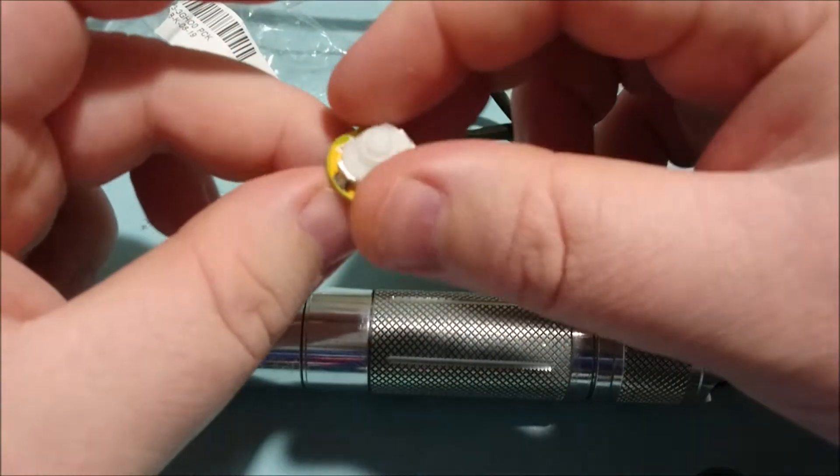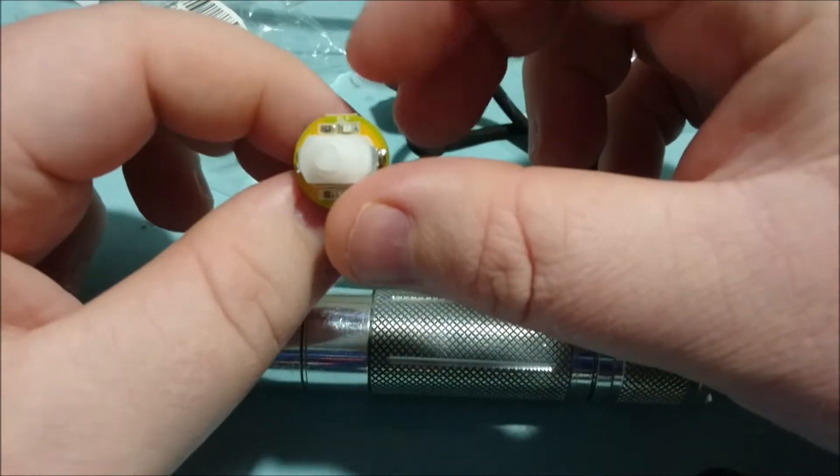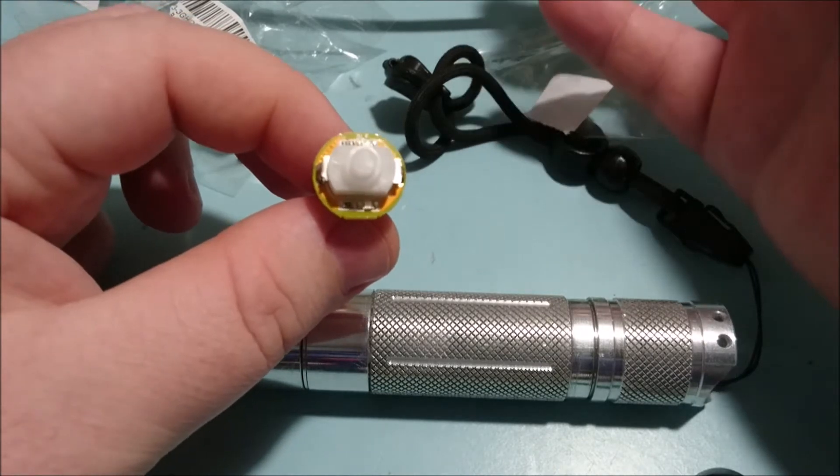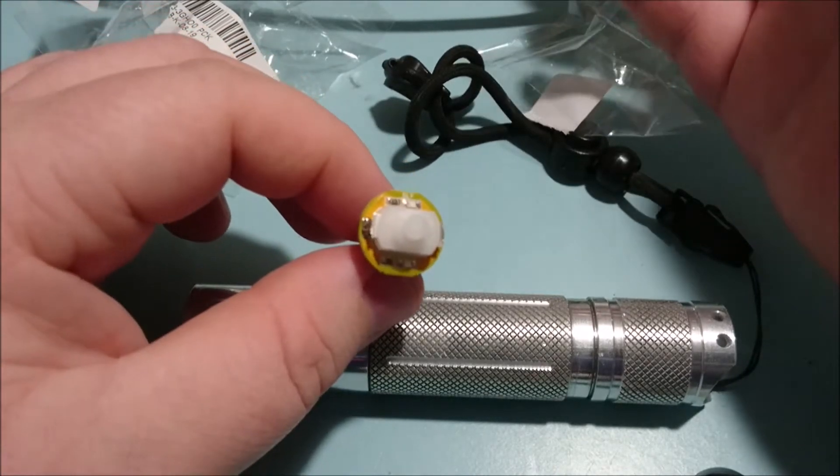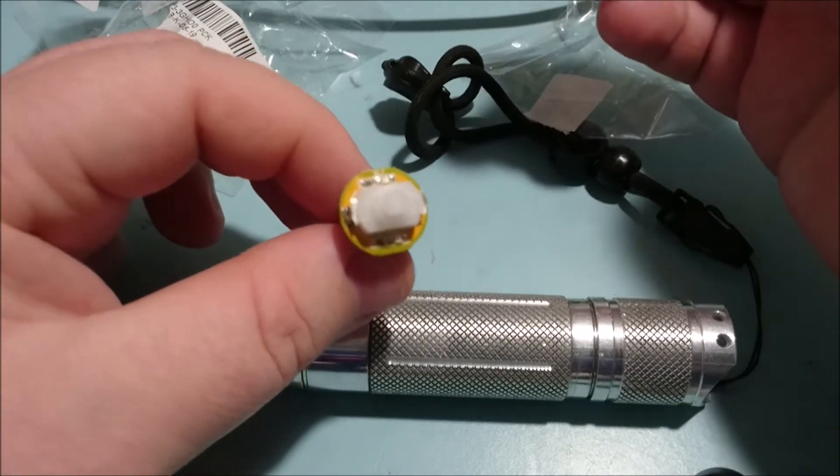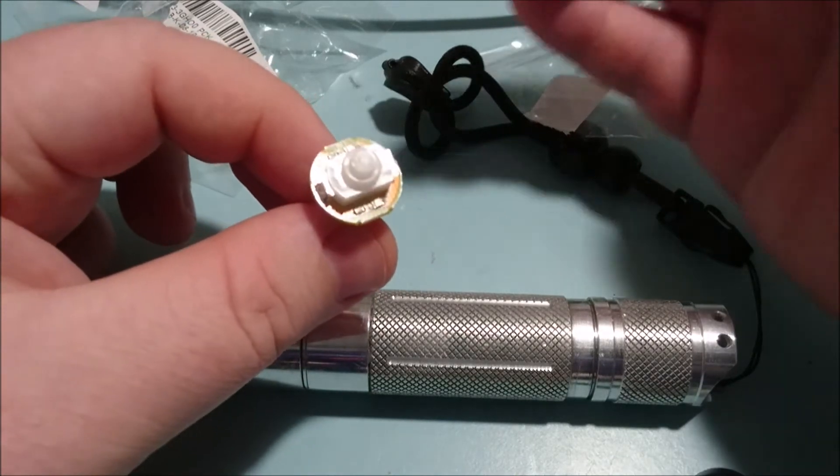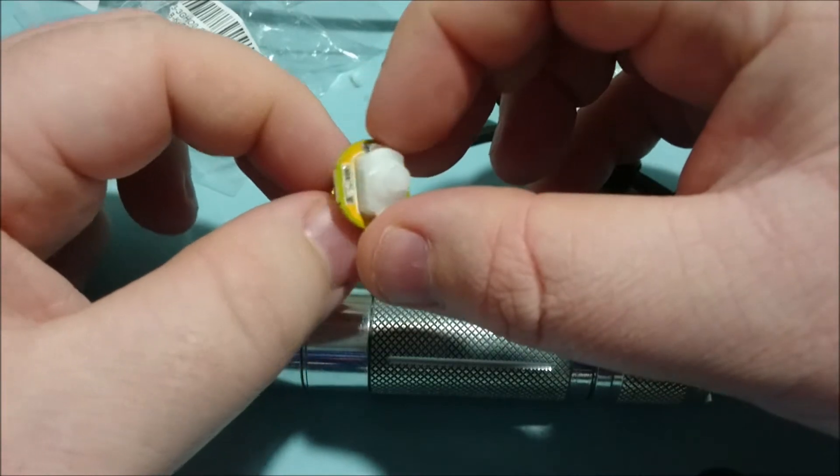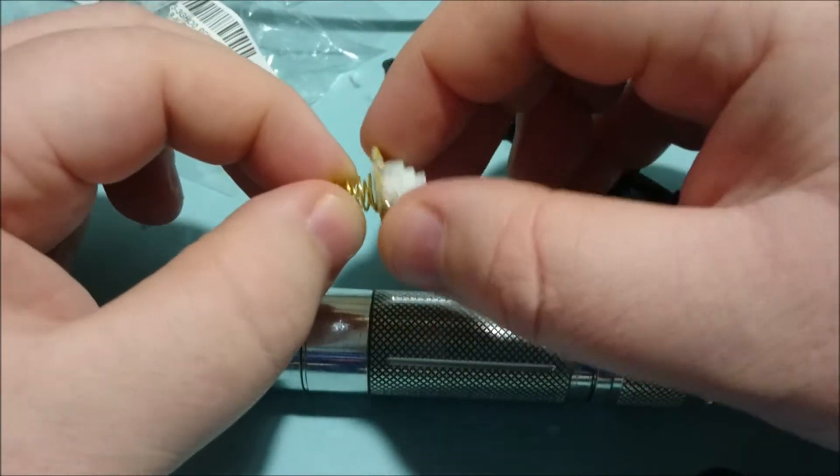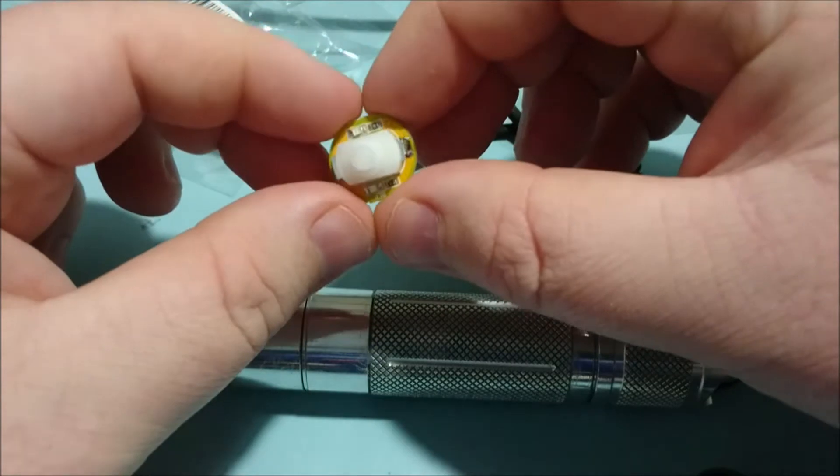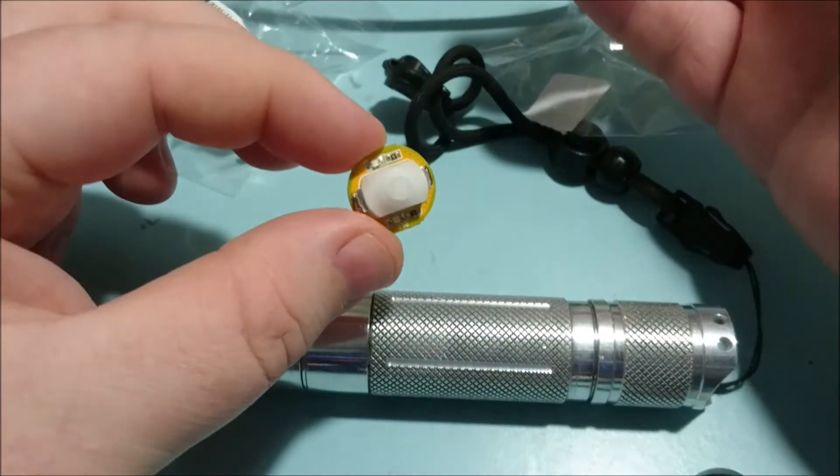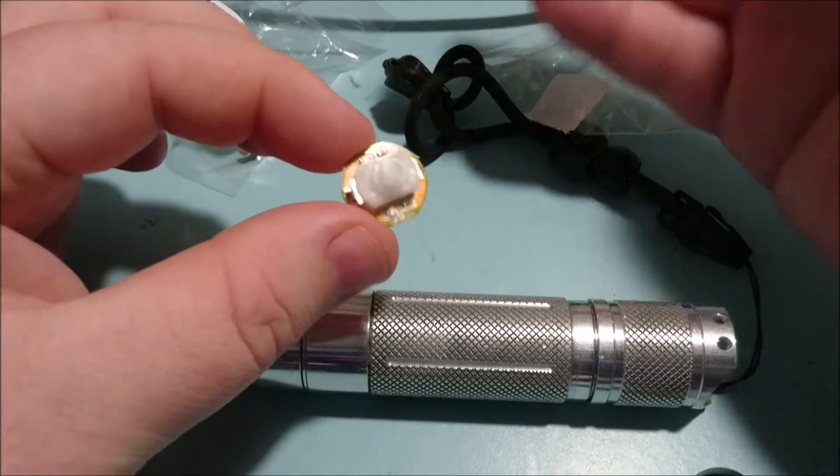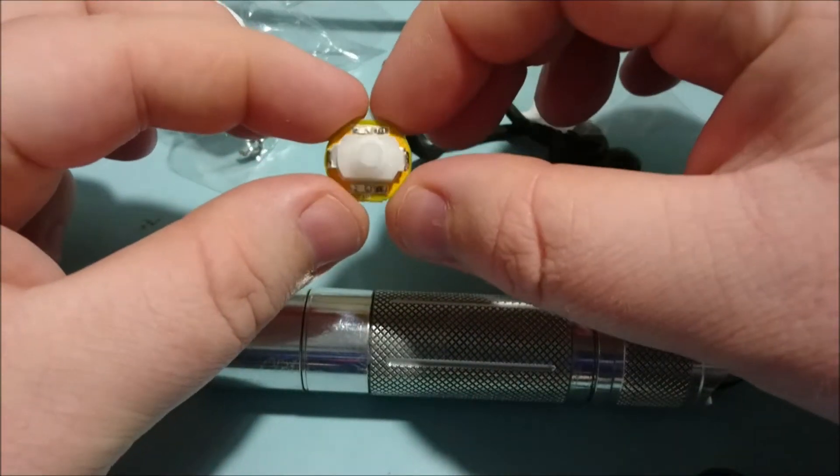So why do you want a lit tail cap on your torch? Well, you probably don't because it doesn't give you any kind of performance increases. It looks cool, makes it look a little bit fancier. It might be good to help find your light if you're in the dark. Downside, it does use more battery. If you don't set it up properly, it can play with the modes.